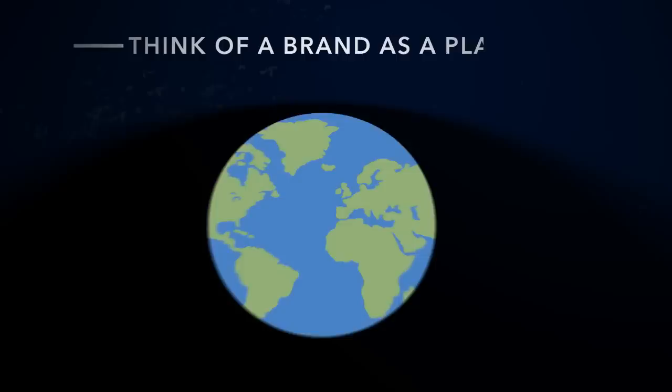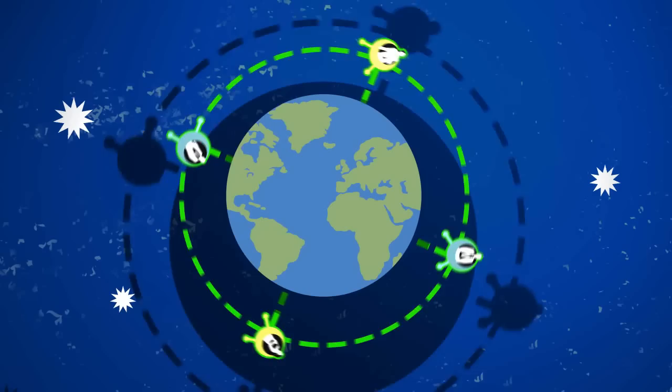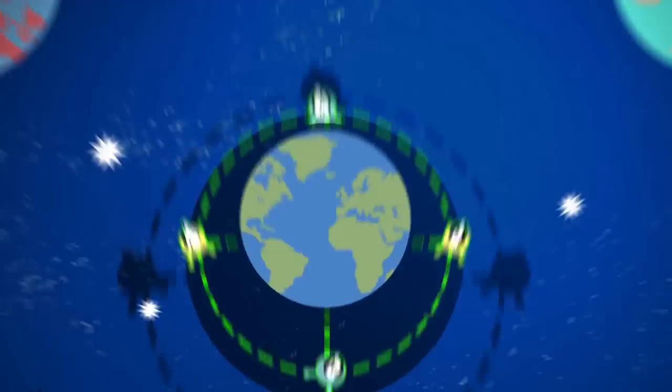Think of your brand as a planet, and your employees as satellites in orbit. In social business, each individual's satellite is connected to the others through its own specialized network, coordinating its efforts in service of the brand.